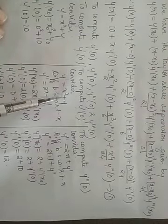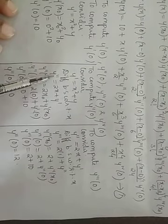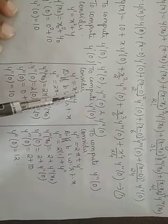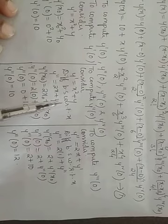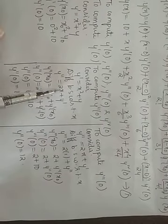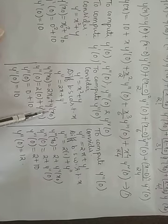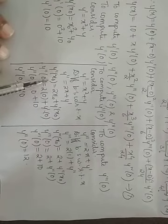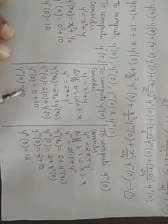To compute y''(0): differentiate y' = x² + y with respect to x, giving y'' = 2x + y'. Substituting x₀ = 0 and y'(0) = 10: y''(0) = 2(0) + 10 = 10.